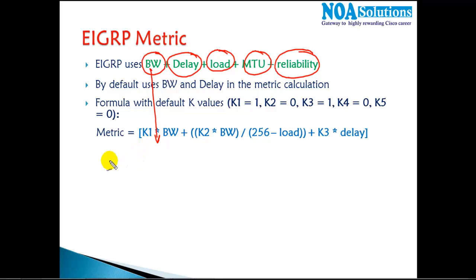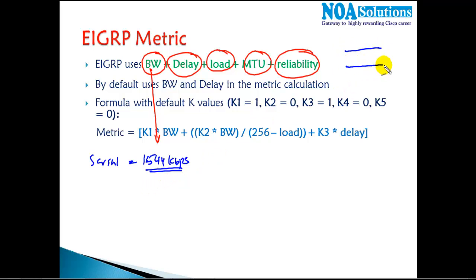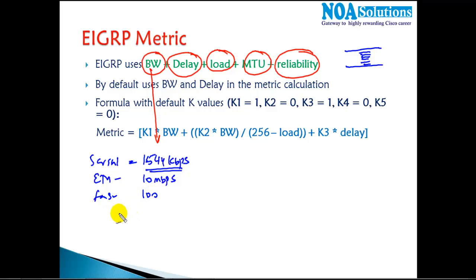Bandwidth tells us how many bits per second can be sent at one time — essentially the width of the link. The more bandwidth, the more information you can send at once. The default bandwidth on a serial link is 1544 kbps, on Ethernet links it's 10 Mbps, and on Fast Ethernet interfaces it's 100 Mbps.